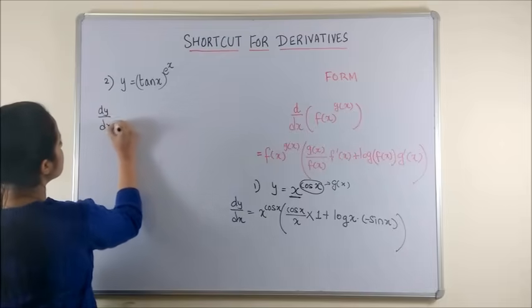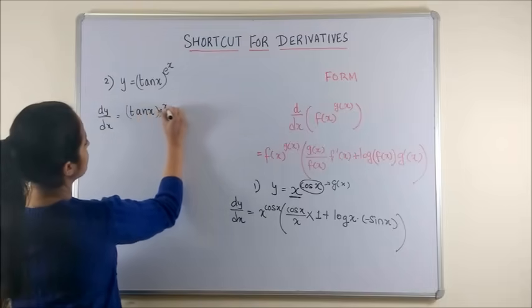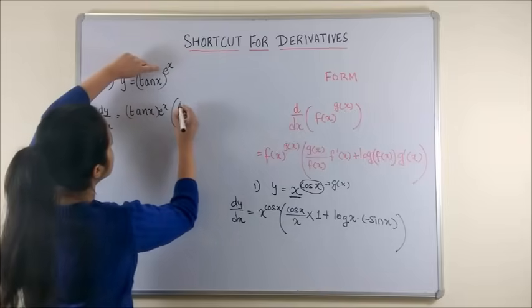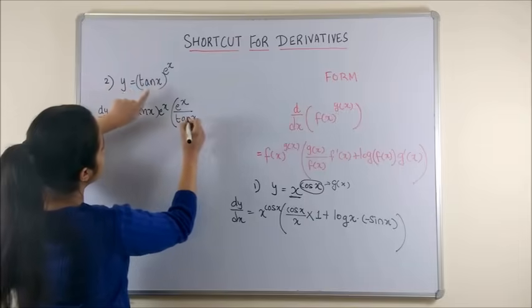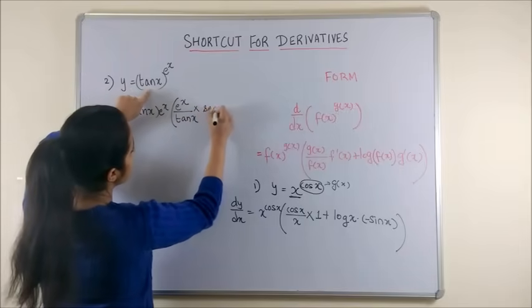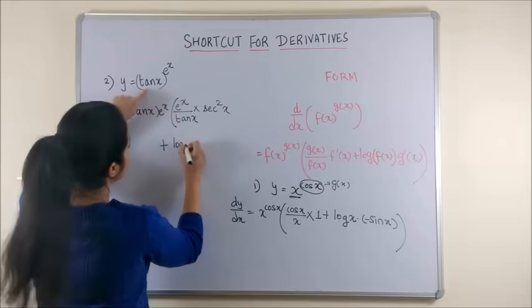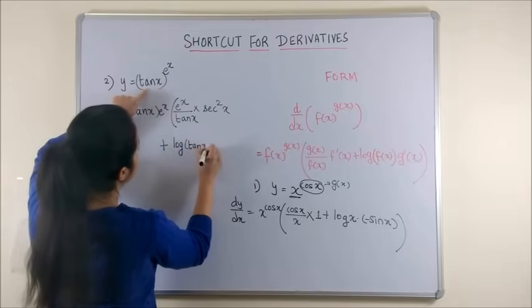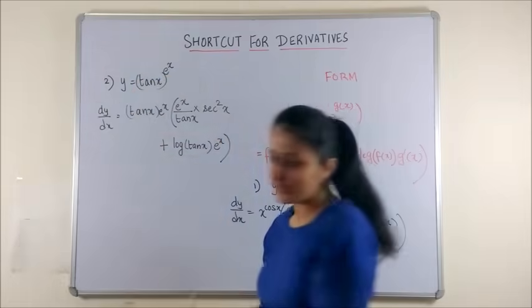So, once again your derivative is you write the function as it is into g(x) which is always the power upon the function into the derivative of tan x which is secant square x plus log of the function into derivative of e to the power x which is e to the power x. And that's it. You have your answer.